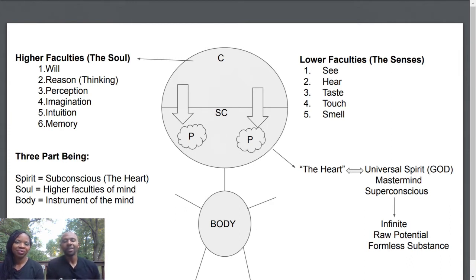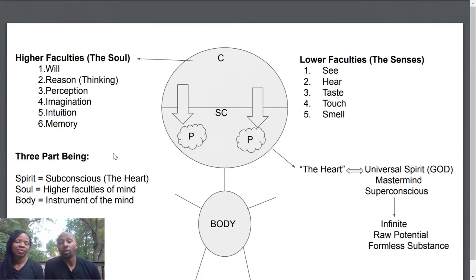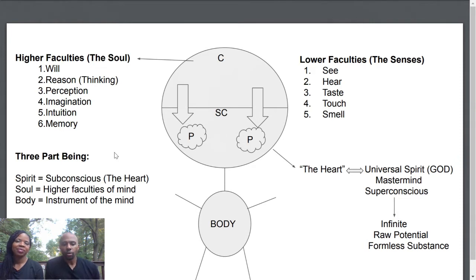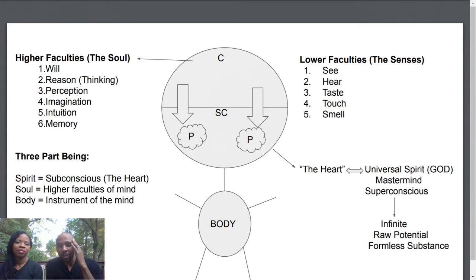We'll start at the bottom left-hand corner of the screen. It says we are three-part beings: spirit, soul, and body. Our spirit is equivalent to our subconscious mind, or the heart. The soul is our higher faculties of mind, which we'll talk about in a moment. Then we have the physical body, which is ultimately the instrument or vehicle of the mind — it's how we interact with the physical world. The body cannot act without the mind's permission; your arm doesn't start moving without your mind telling it to first.